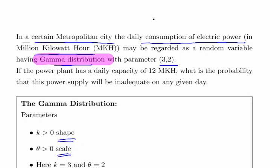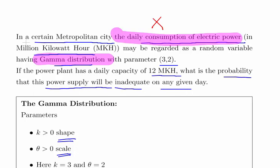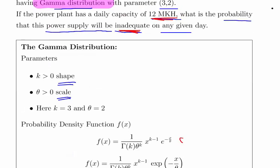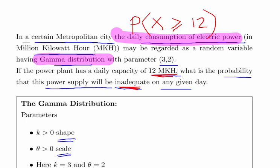Now the variable of interest here is the daily consumption of power, so that's our x variable. So let's continue. If the power plant has a daily capacity of 12 MKH, what is the probability that this power supply will be inadequate on any given day? That means what is the probability that x is going to be greater than 12. So 12 is like a maximum, so let's say it supplies 12 every day. What is the probability that the demand will exceed 12? That would be inadequate supply.